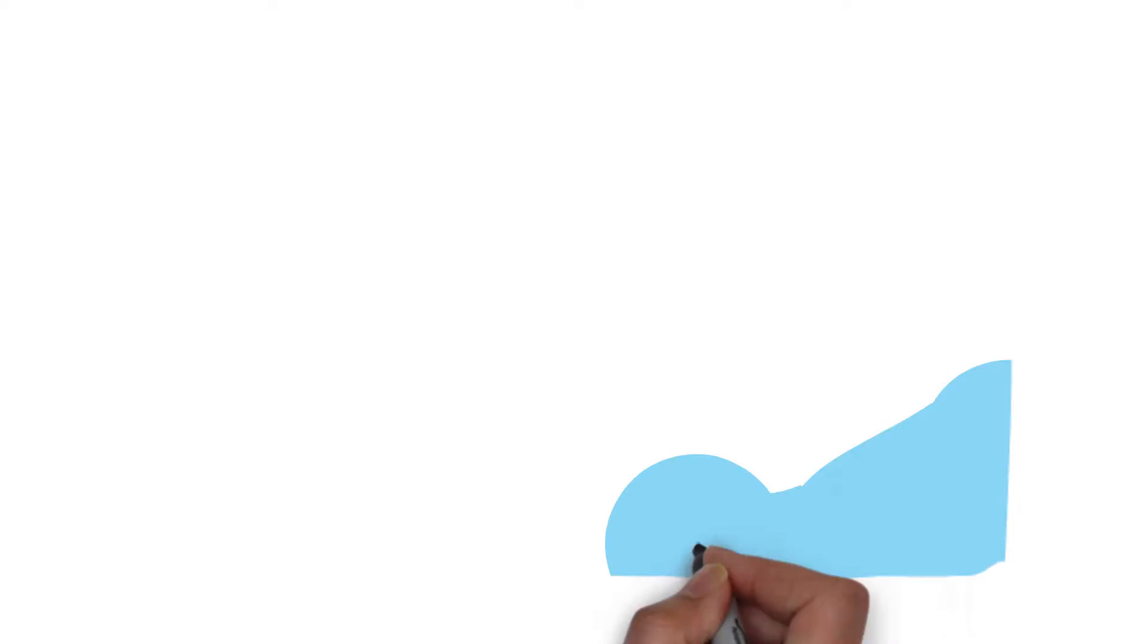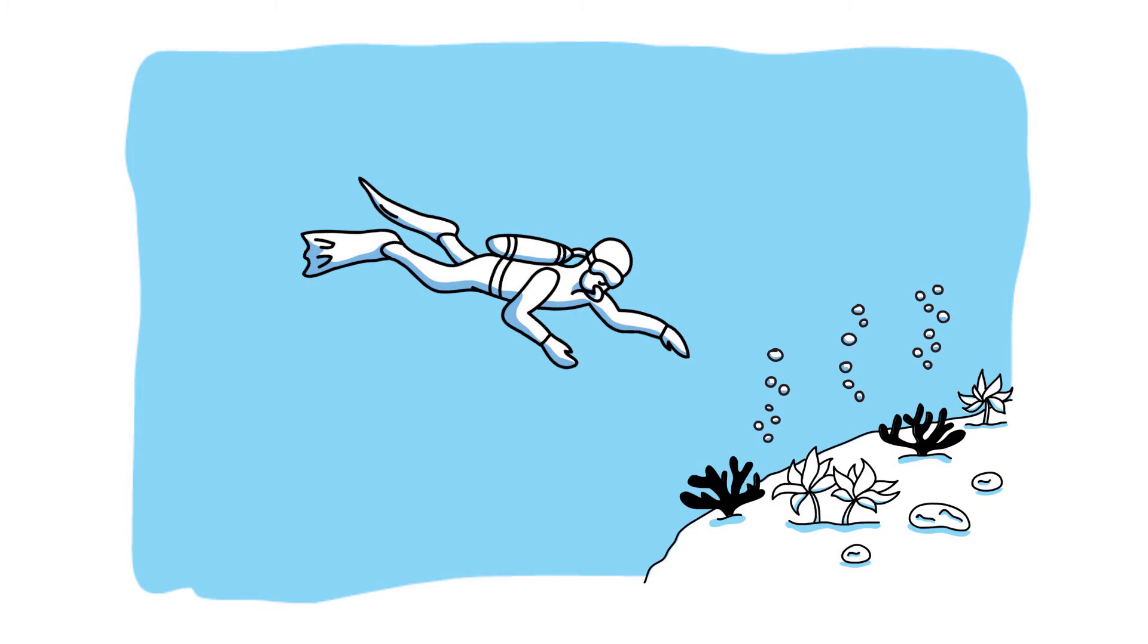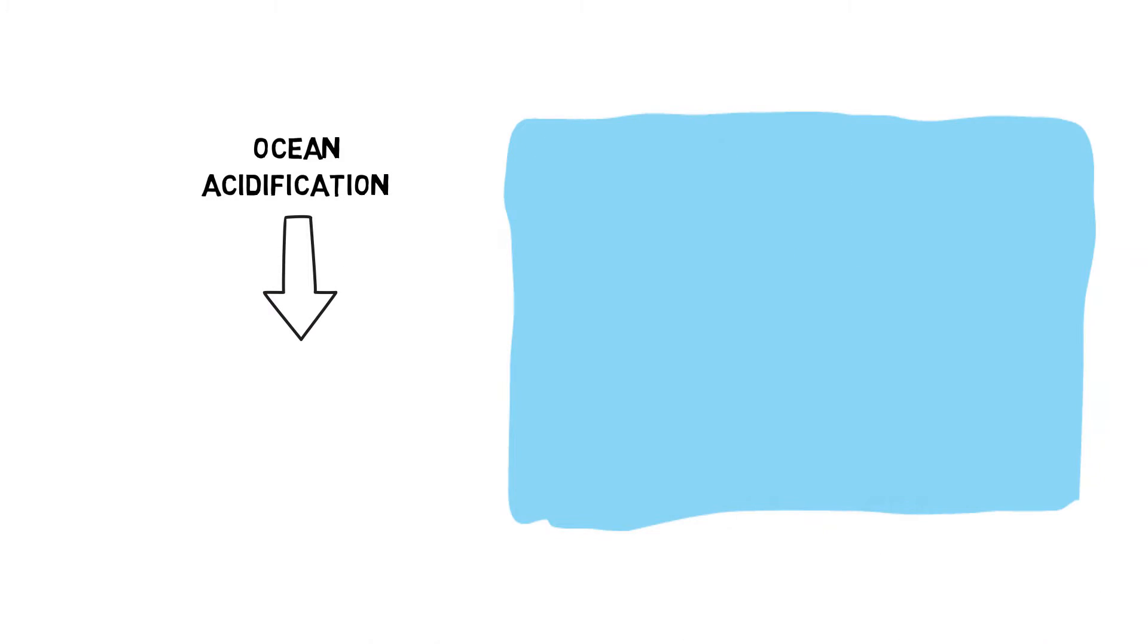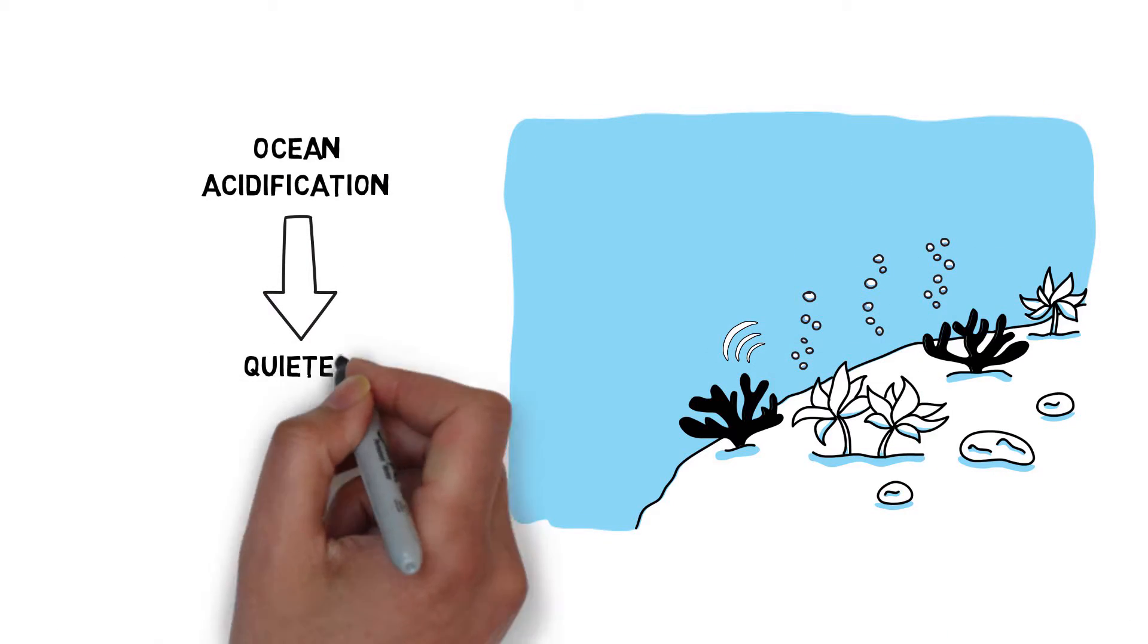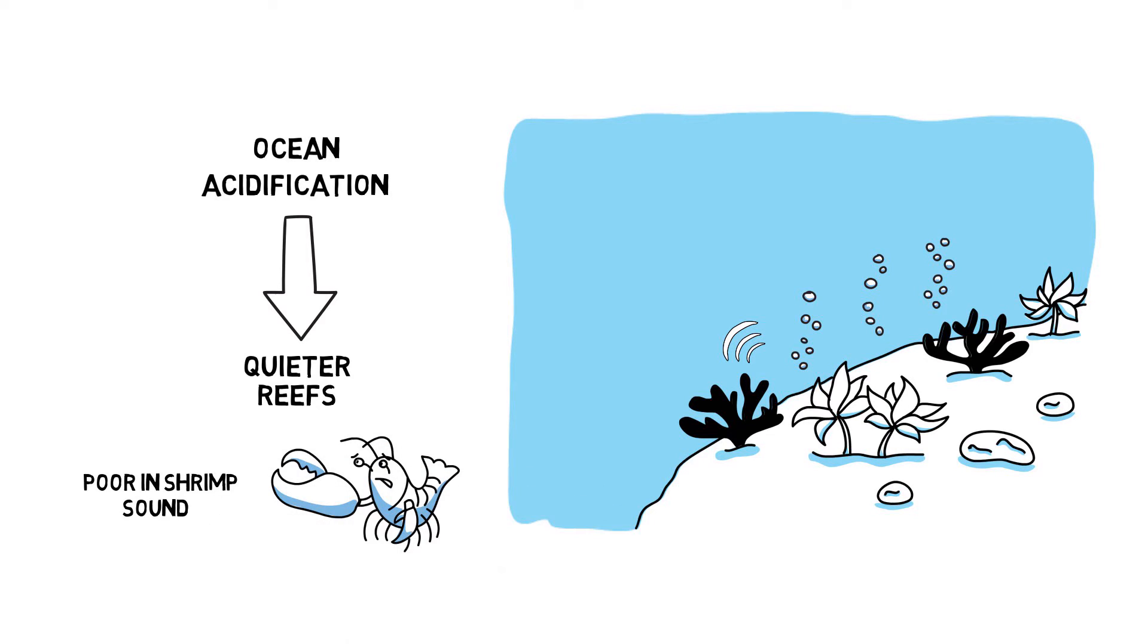A team of scientists investigated this question using natural CO2 vents, which are like natural laboratories for the study of ocean acidification. Results showed that end-of-century levels of CO2 made reefs drastically quieter, and this was largely due to the silencing of the snapping shrimp chorus.